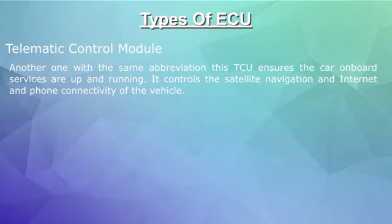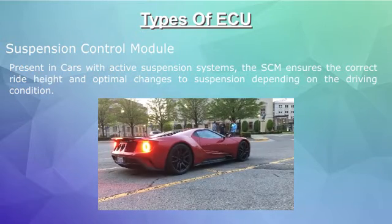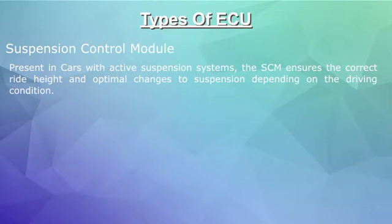Telematic control module: this module ensures the car's onboard services are up and running. It controls the satellite navigation and internet and phone connectivity of the vehicle. Suspension control module: present in cars with active suspension systems, the suspension control module ensures the correct ride height and optimal changes to suspension depending on the driving condition.